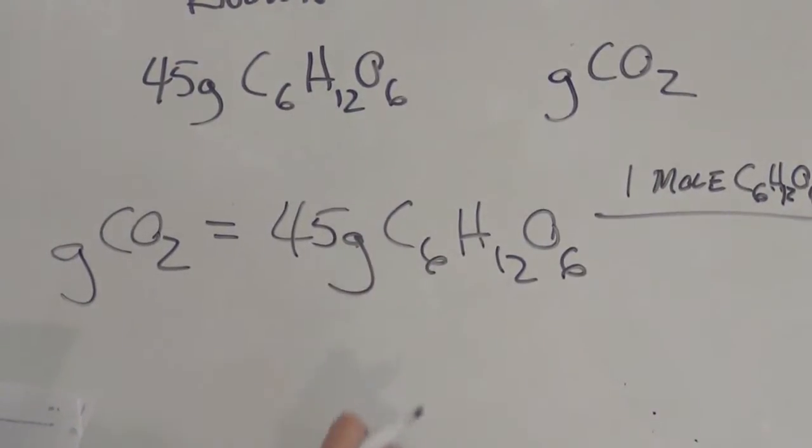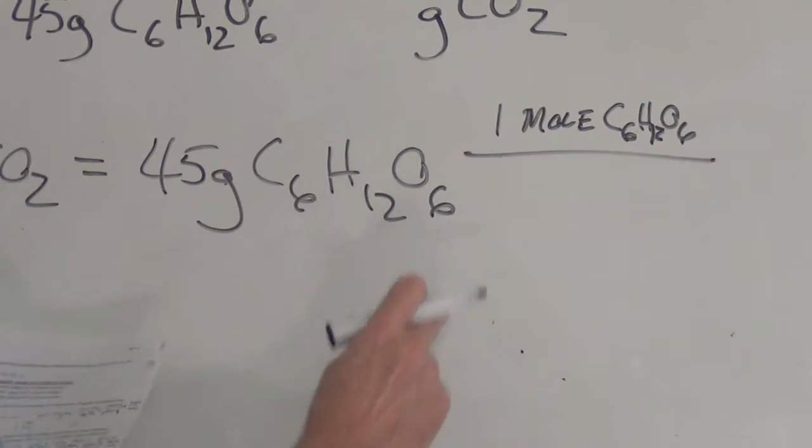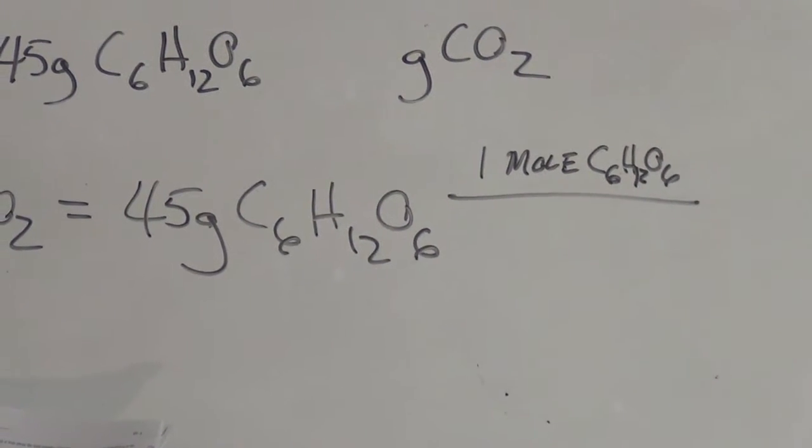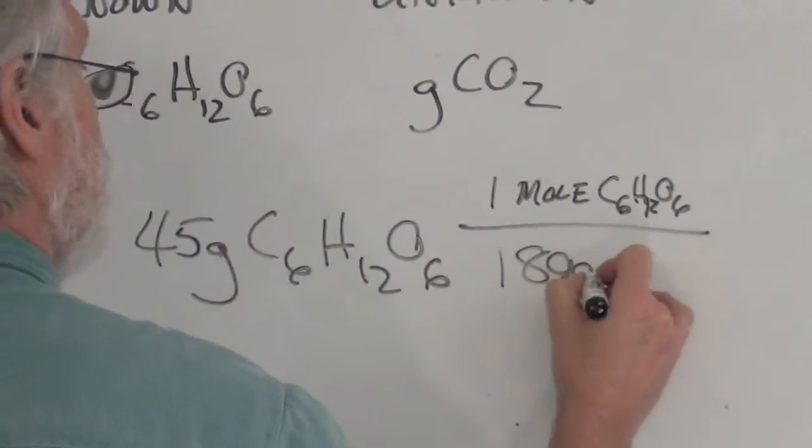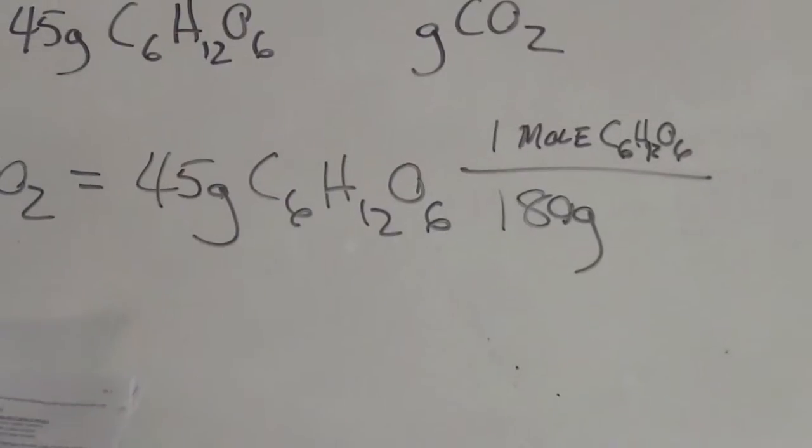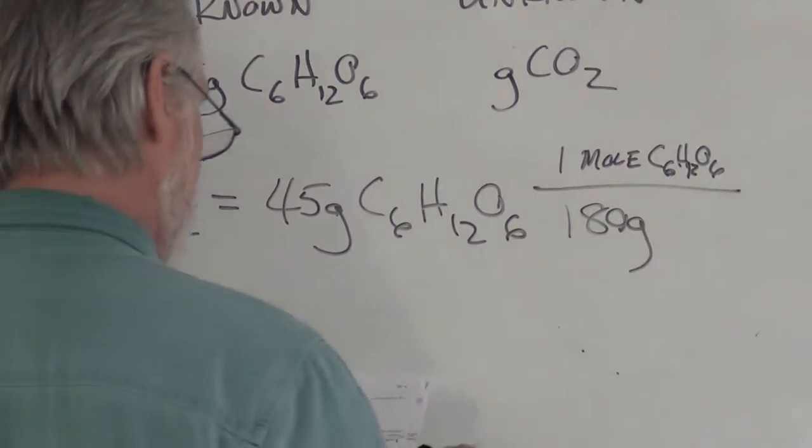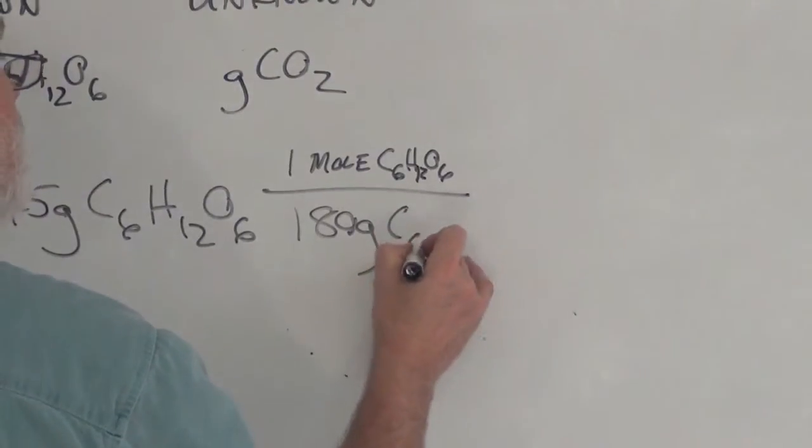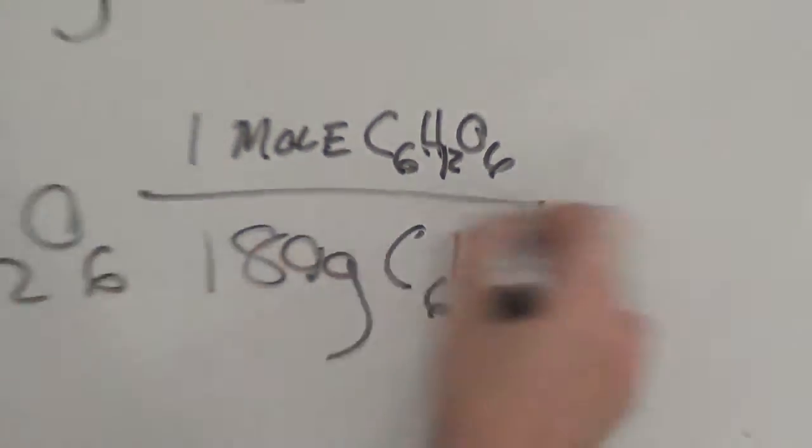6 times 12 is 72 plus 12 is 84 times 6 times 16. Yeah, 180 grams. 180 grams is what the mole mass for one molecule or one mole of sugar is. And that is C6H12O6. Now, does that get rid of the grams?